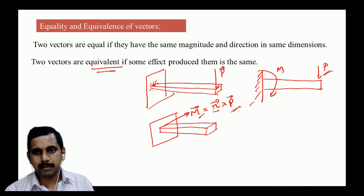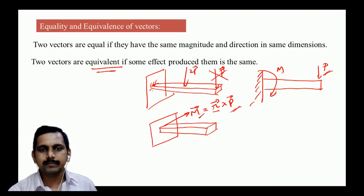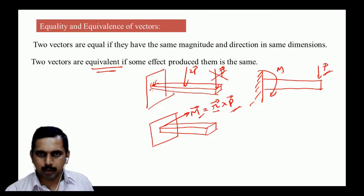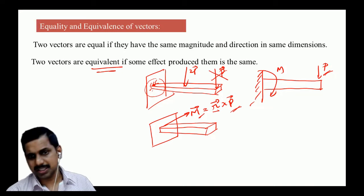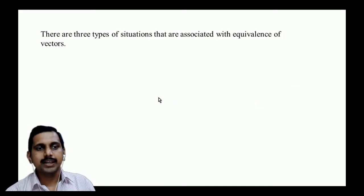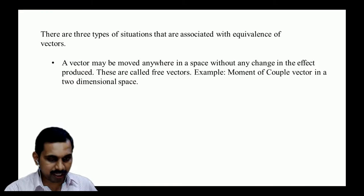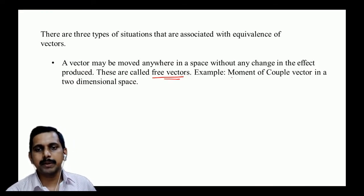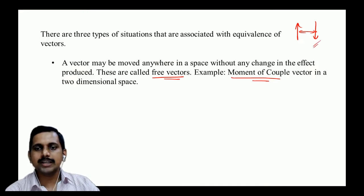There are three types of vector equivalence. First: free vectors — a vector may be moved anywhere in space without change in effect. An example is the moment of a couple, which can be moved anywhere in the plane.